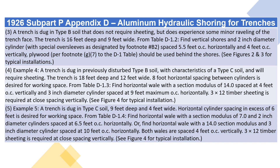Example 5: A trench is dug in type C soil, 9 feet deep and 4 feet wide. Horizontal cylinder spacing in excess of 6 feet is desired for working space. From Table D1.4, find a horizontal whale with a section modulus of 7.0 and 2-inch diameter cylinders spaced at 6.5 feet O.C. horizontally. Or, find a horizontal whale with a 14.0 section modulus and 3-inch diameter cylinders spaced at 10 feet O.C. horizontally. Both whales are spaced 4 feet O.C. vertically. 3-by-12 timber sheeting is required at close spacing vertically. See figure 4 for typical installation.